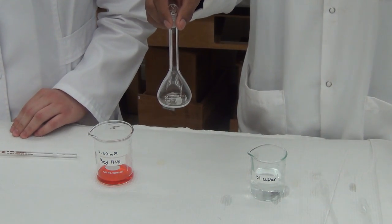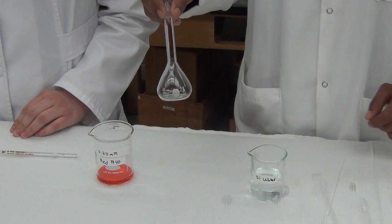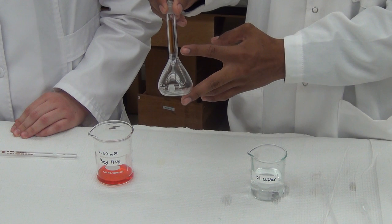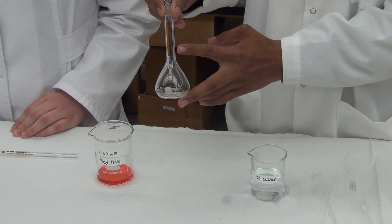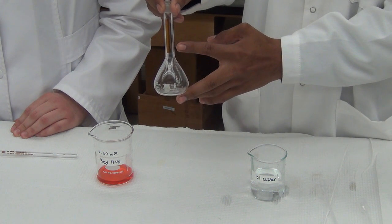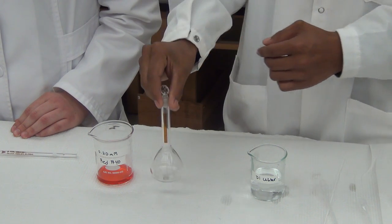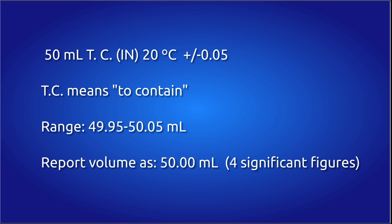The volumetric flask is stamped with 50 milliliters plus or minus 0.05 TC 20 degrees Celsius. TC means to contain. This volumetric flask will contain 50 milliliters at 20 degrees Celsius with an accuracy of 0.05 milliliters when the flask is filled so that the bottom of the meniscus of the liquid is on top of the calibration line.